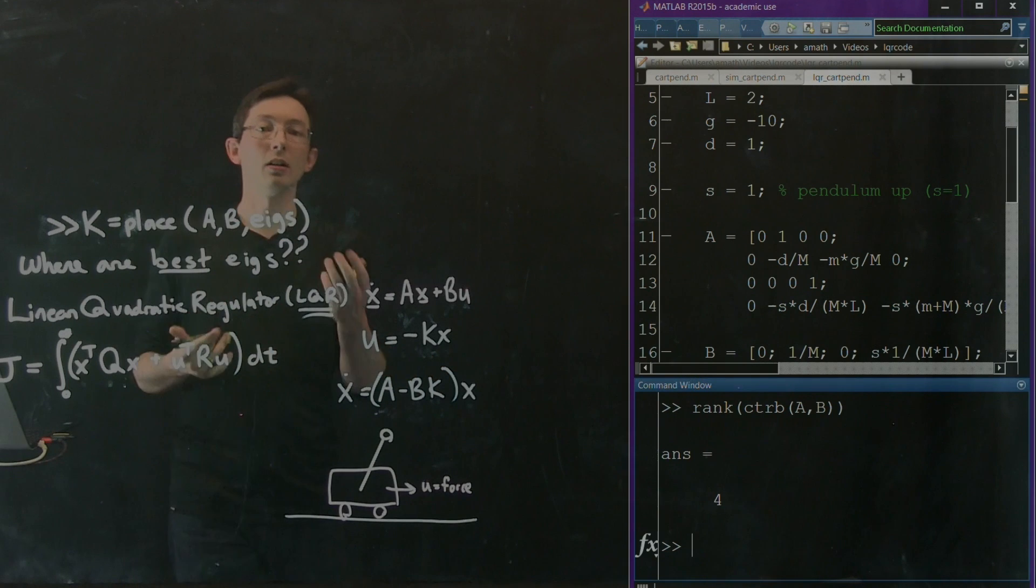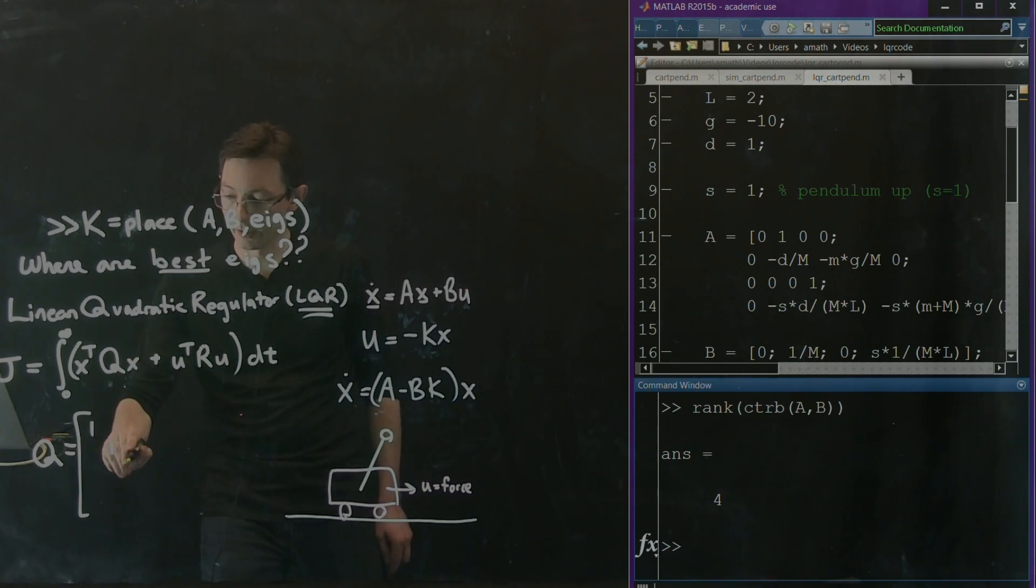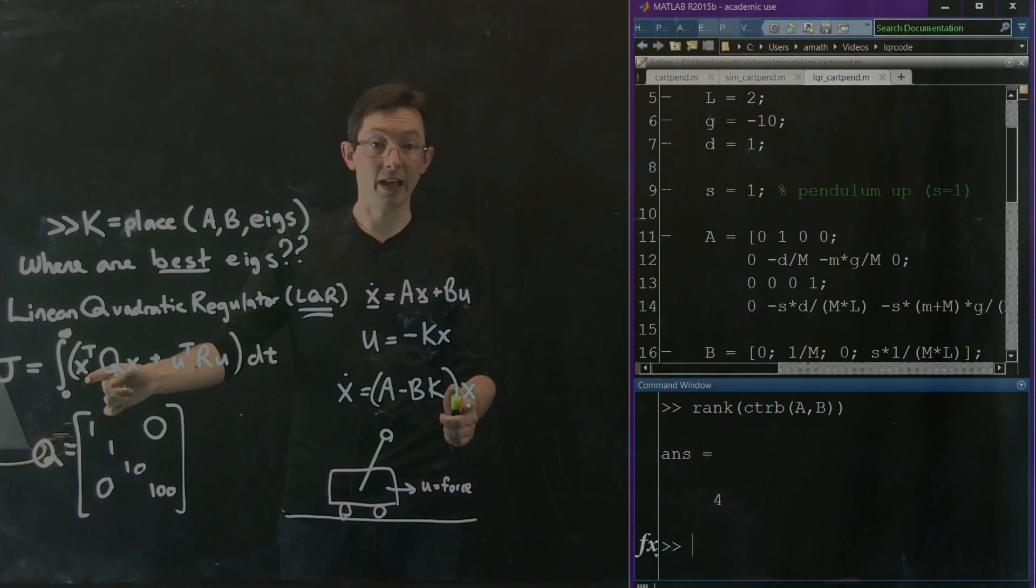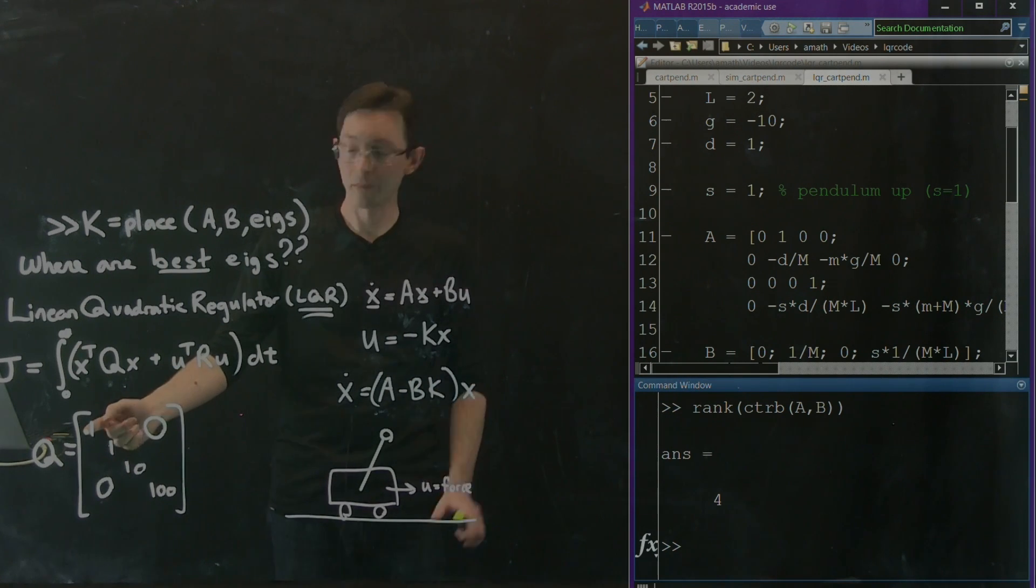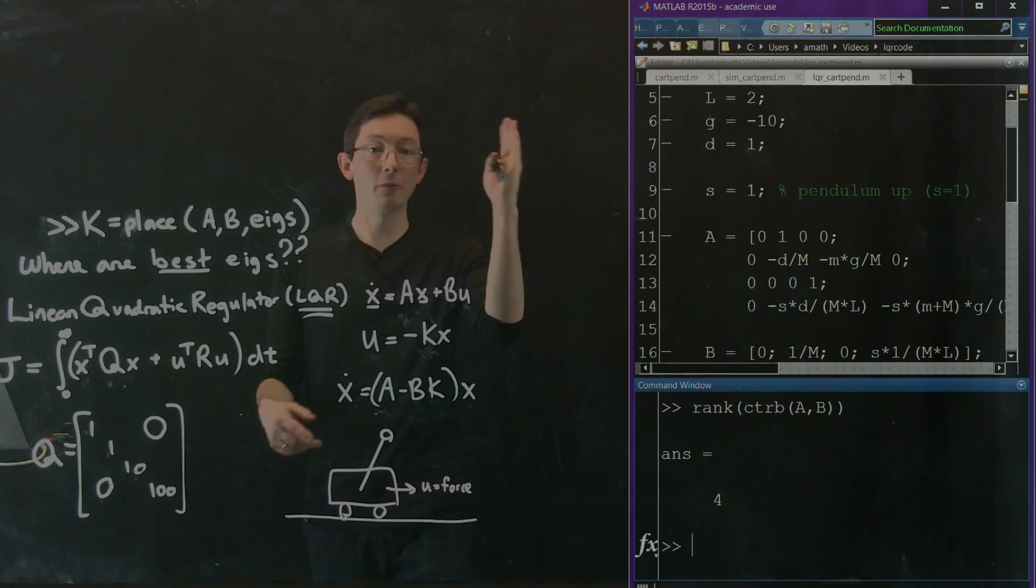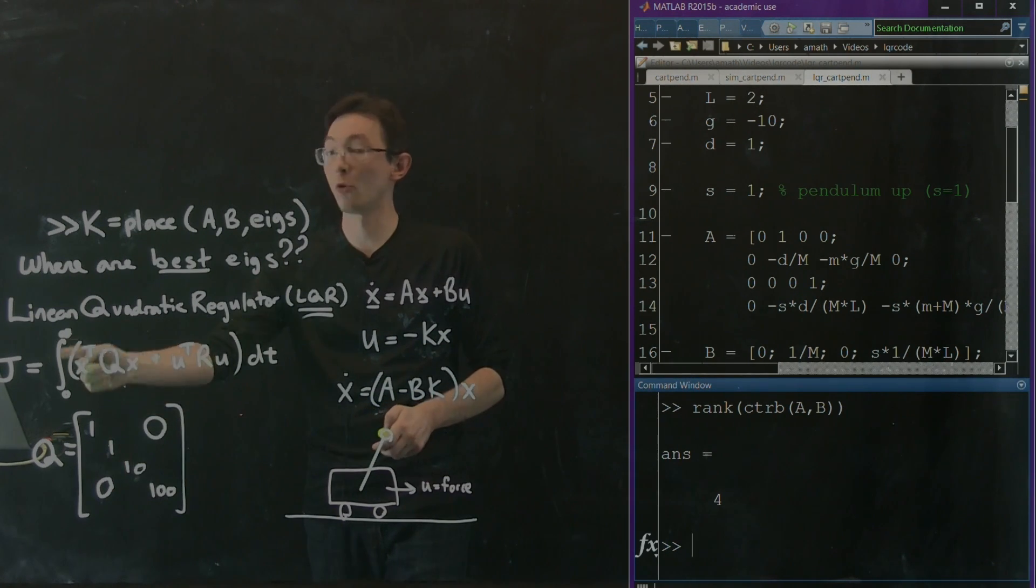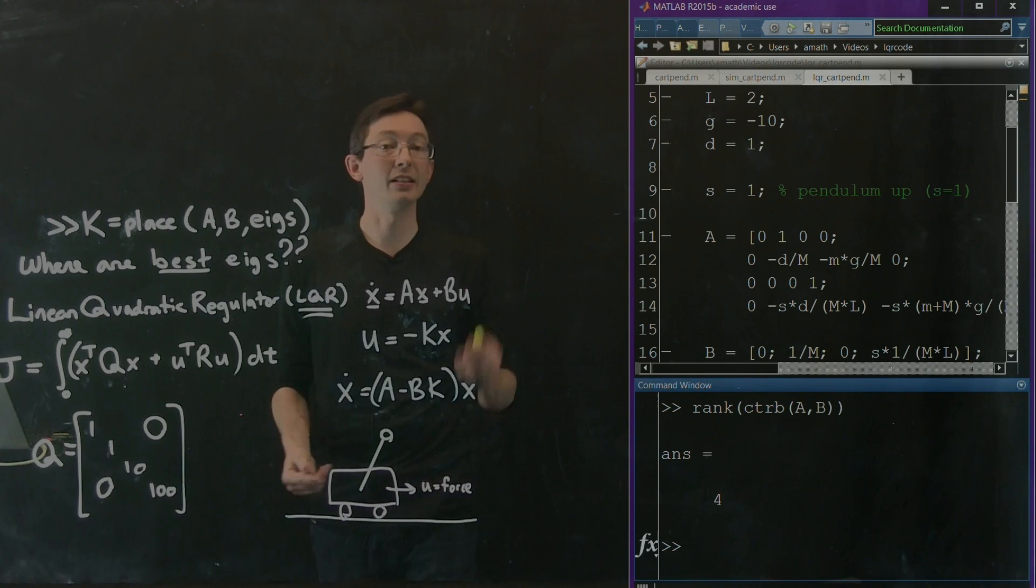And so Q and R are these matrices. So for example, if I wanted to build Q equals, let's say, 1, 1, 10, and 100, and 0 is everywhere else, essentially what that would do is it would say the first variable in X, which is the position of the cart, I penalize it with 1 if it's not where I tell it to be quickly. Same with X dot. This is the theta dot penalty. It's bigger. I want my thing to be stabilized in the vertical position quickly. So I'm going to make this number bigger so that it's more penalized if it's not where I tell it to be in the vertical up position. And I'm making the theta dot penalty even larger.